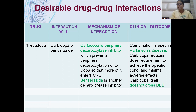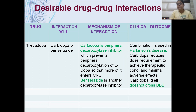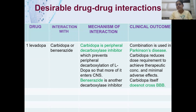This combination is used in Parkinson's disease. Carbidopa reduces the dose requirement of levodopa, because more levodopa enters the brain, leading to a reduced dose concentration requirement to achieve therapeutic concentration and minimal adverse effects. Peripheral decarboxylation is inhibited, so dopamine is not produced in the periphery. Dopamine converting to adrenaline and noradrenaline in the periphery can cause tachycardia, palpitations, and arrhythmia — these side effects are minimized.